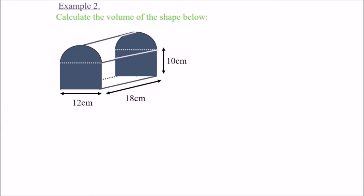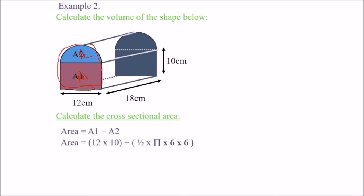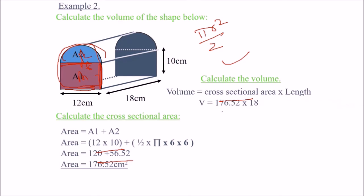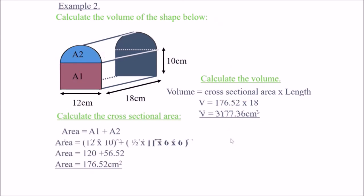Another shape has a cross section consisting of a rectangle A1 (12 × 10) and a semicircle A2. The semicircle area is ½ × π × r², where radius is 6 (half of diameter 12), giving ½ × π × 36. Combining, total cross-sectional area is 176.52. Volume = 176.52 × 18 = 3177.36 centimeter cube.